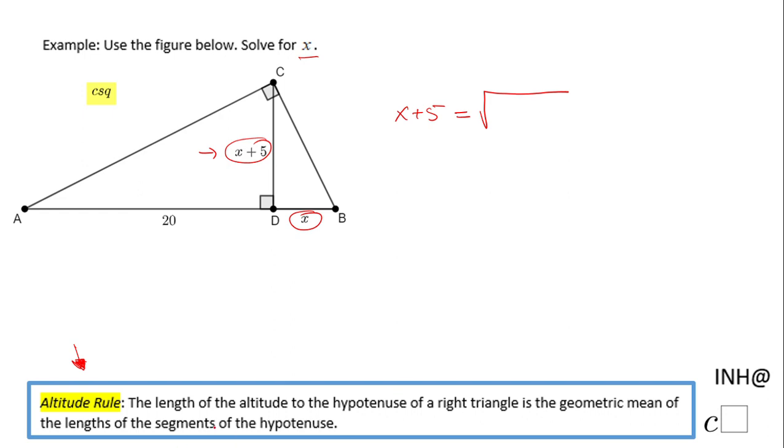Of the length of the segments of the hypotenuse, so in this case 20 and this x I mentioned at the beginning. So this is what that altitude rule says. And now we notice we have a radical equation.